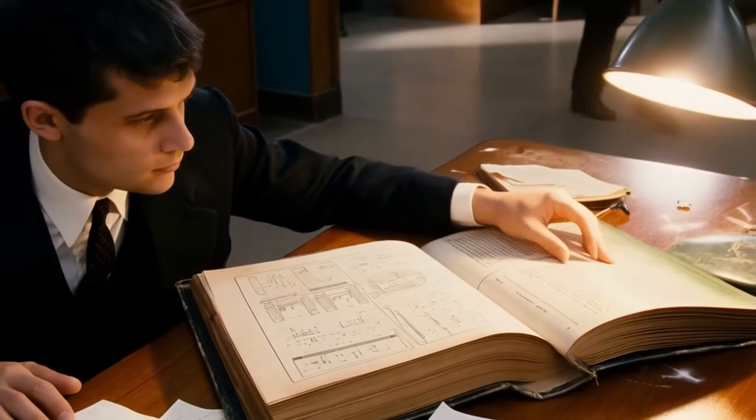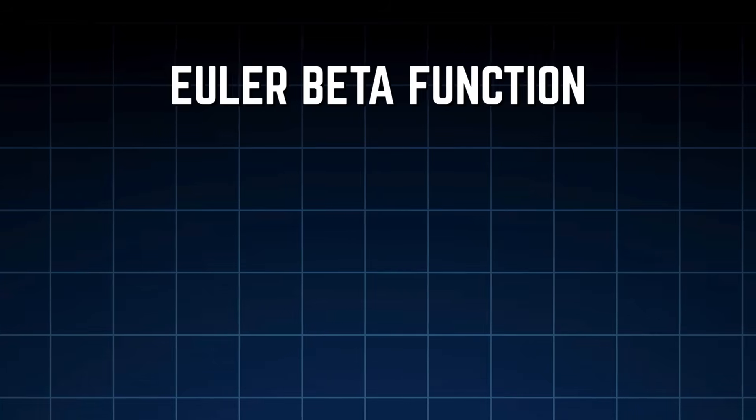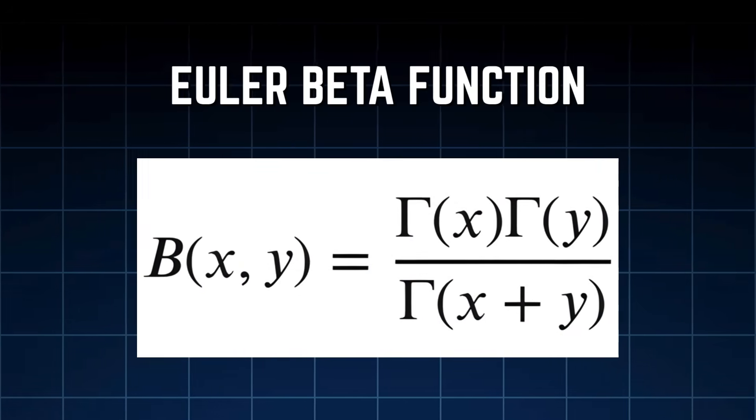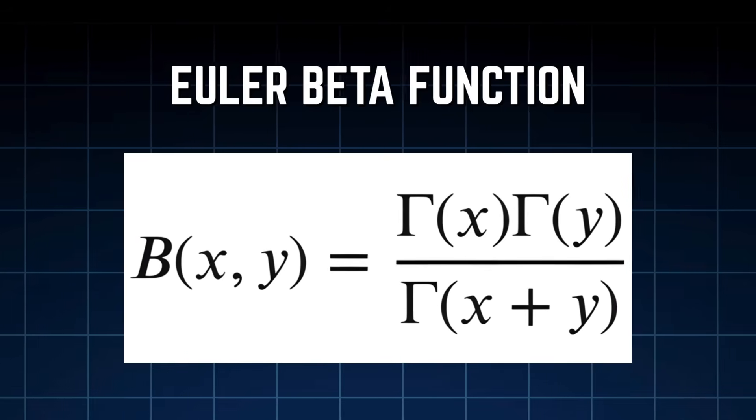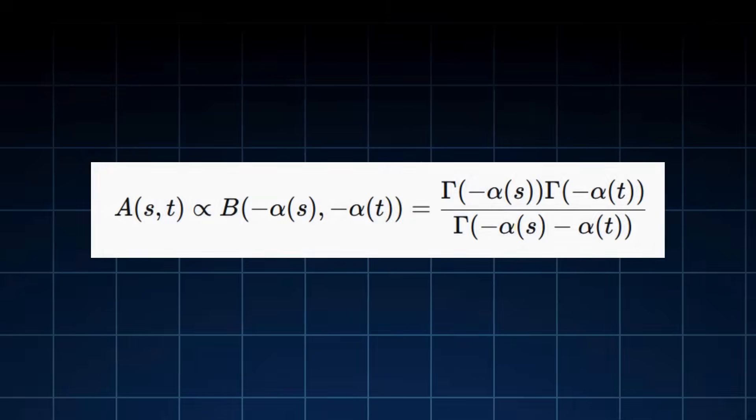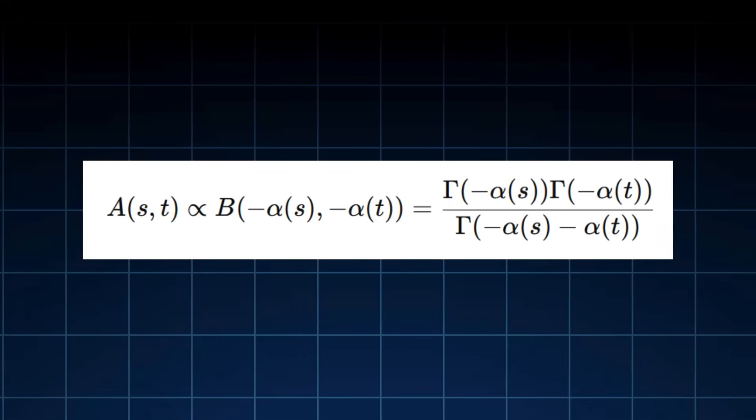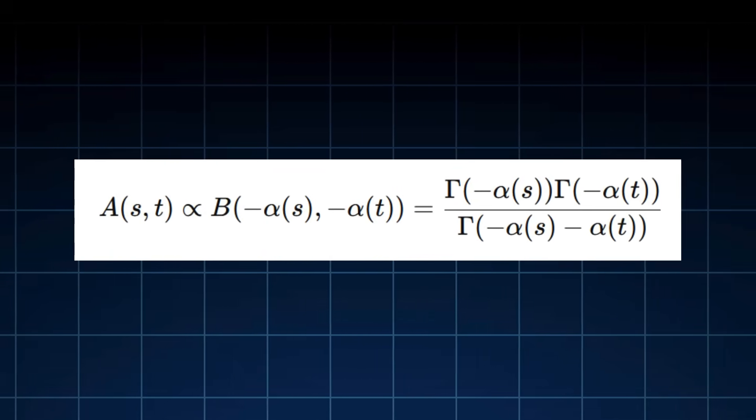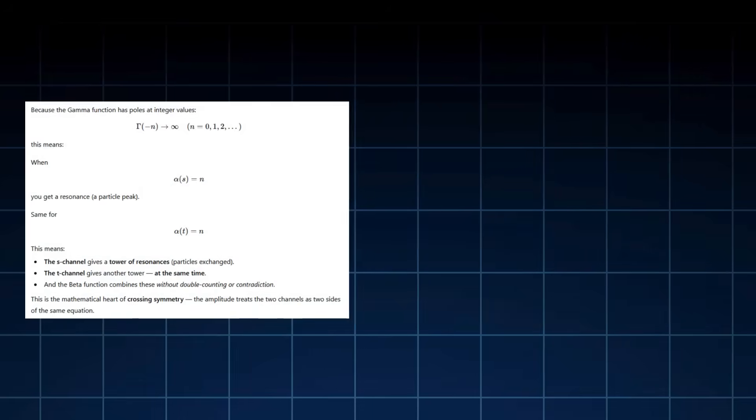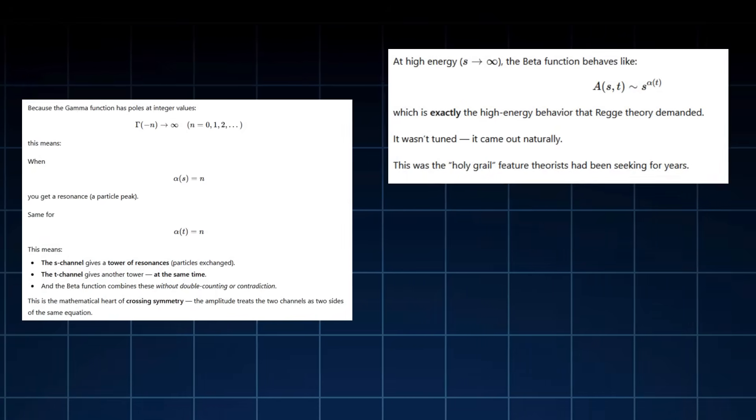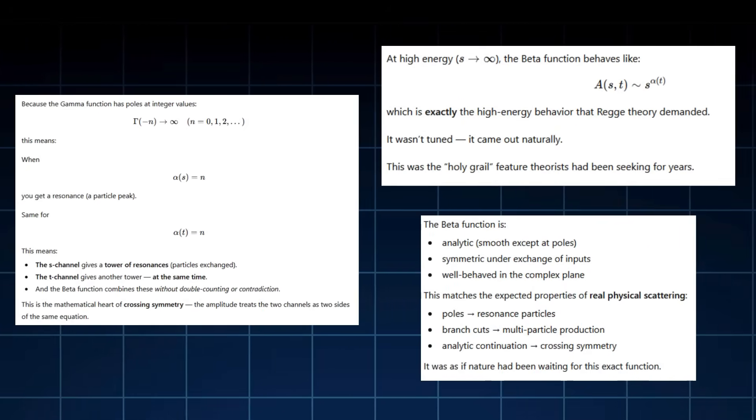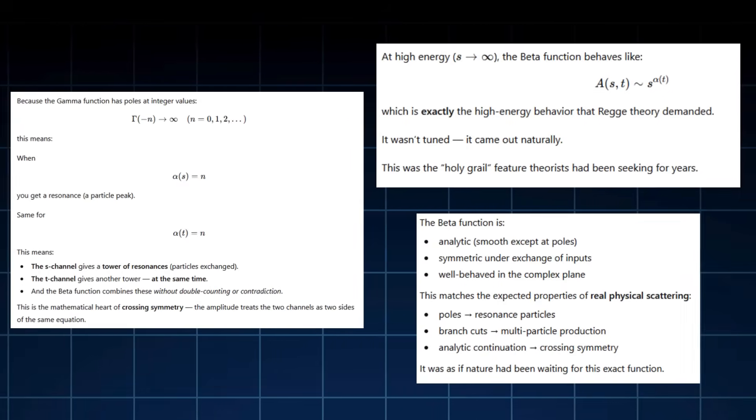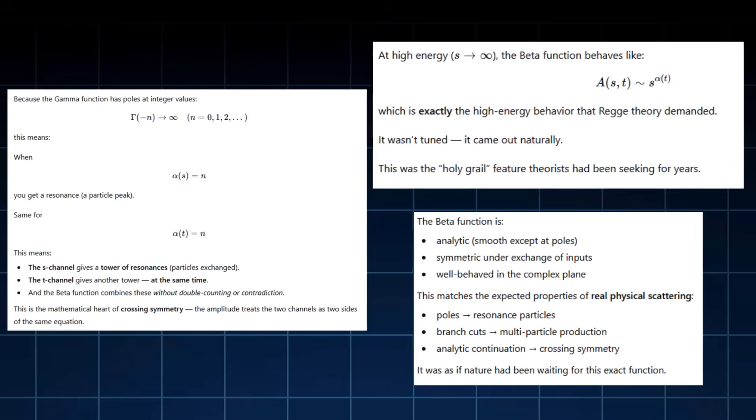A centuries-old mathematical function. The Euler Beta function. First studied in the 18th century. Simple. Elegant. Forgotten by particle physics. He plugged it in. And to his astonishment, it worked. Perfectly. The Beta function captured the patterns of particle collisions exactly as nature showed them. It satisfied all the theoretical conditions physicists demanded. Crossing symmetry. Rege behavior. Everything. Gabriele Veneziano had done it. He had found the formula that described the strong force's chaotic world.